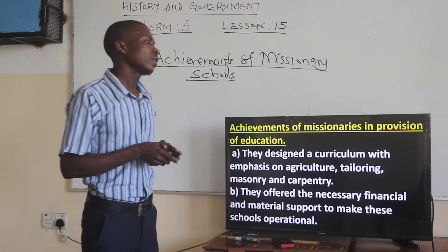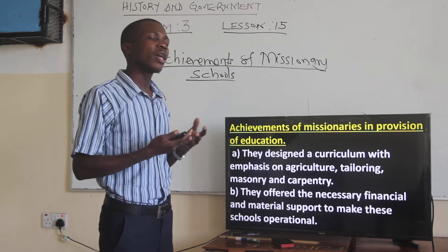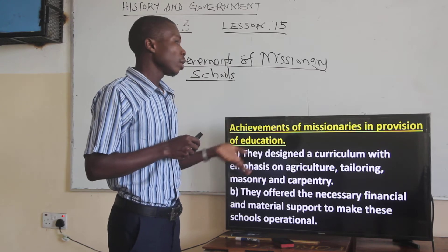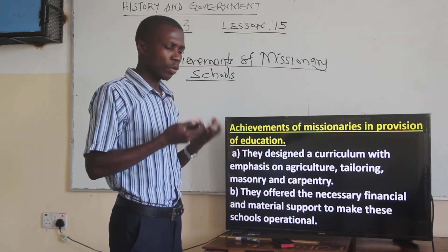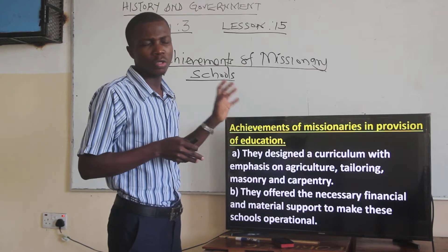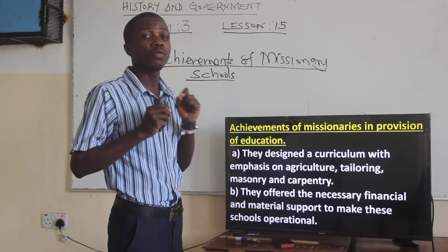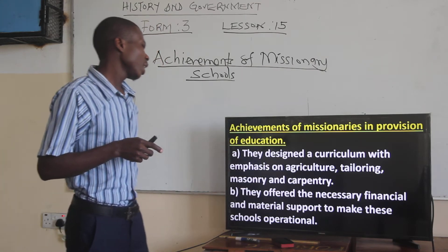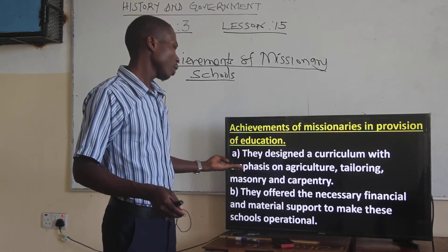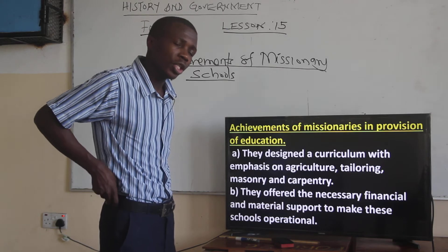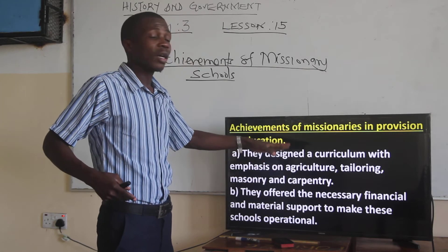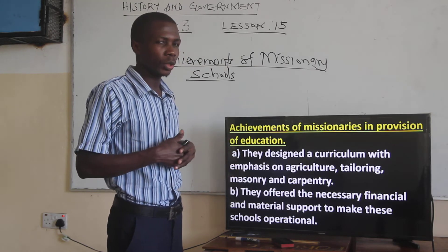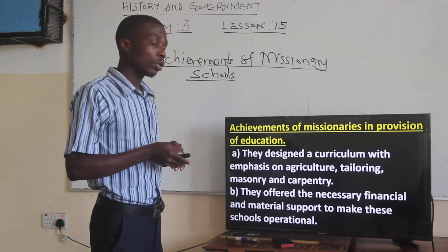Let's look at the achievements of missionaries in education. The aims and achievements are closely linked — what you aim at would be an achievement in one way or the other. One of the achievements is that they designed a curriculum with emphasis on agriculture, tailoring, machinery, and carpentry. Students taking education from missionary schools had their curriculum designed around these practical skills.